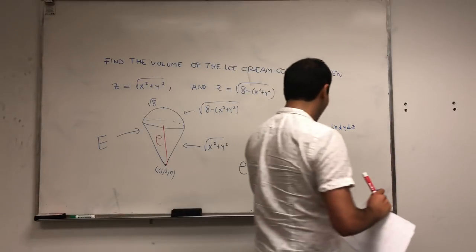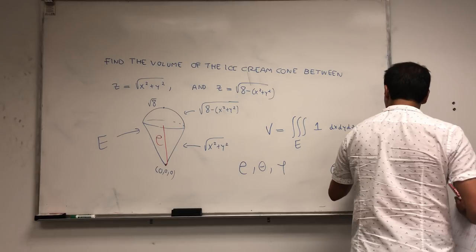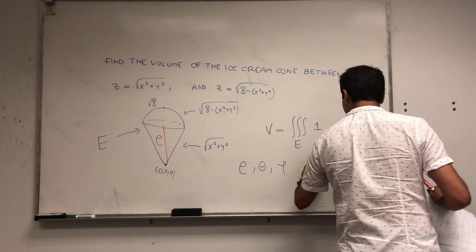So on the one hand we have that rho is between square root of eight, which is two square root of two, and zero.